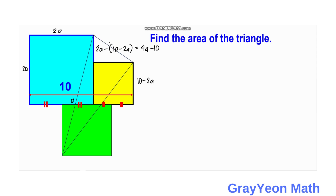This distance is actually the side of the green square, which is half of the combined sides of the 2 squares. If you combine that, it would be 10 over 2, which is equal to 5. So the side of the green square is 5.